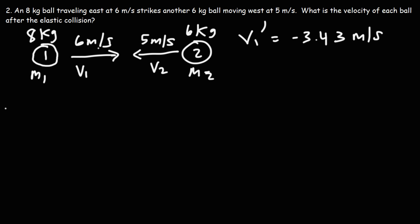Now, let's do the same thing for the second one. So it's 2, M1 over M1 plus M2 times V1 minus M1 minus M2 over M1 plus M2 times V2.